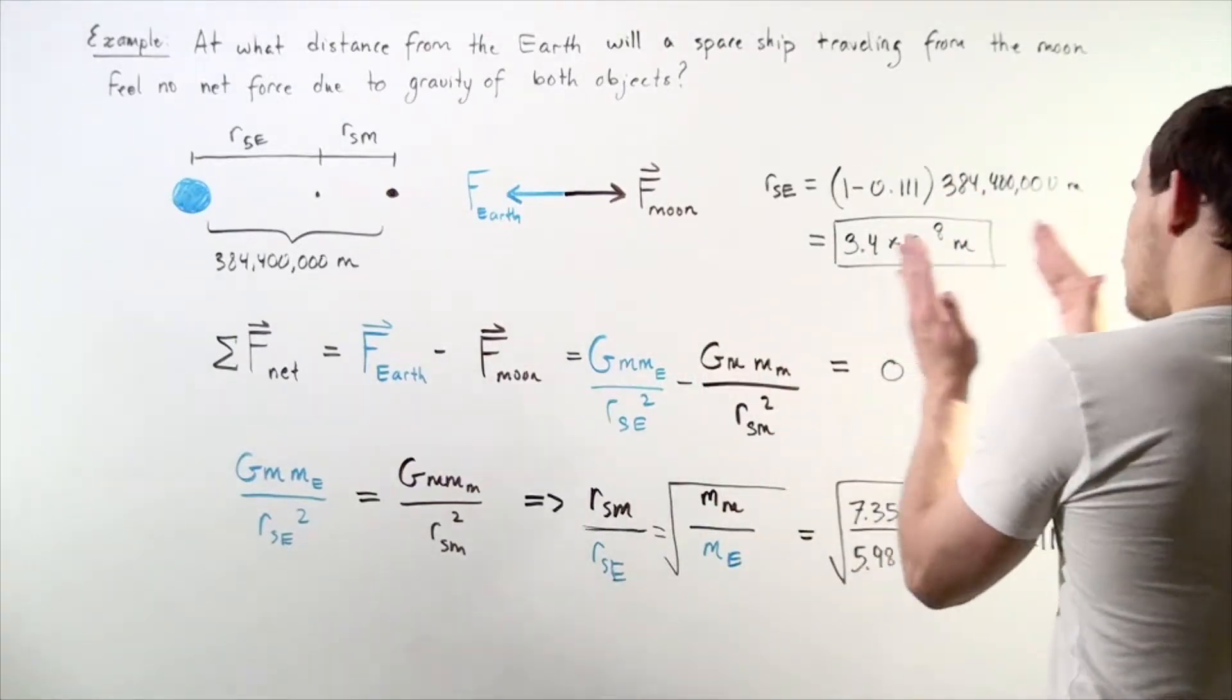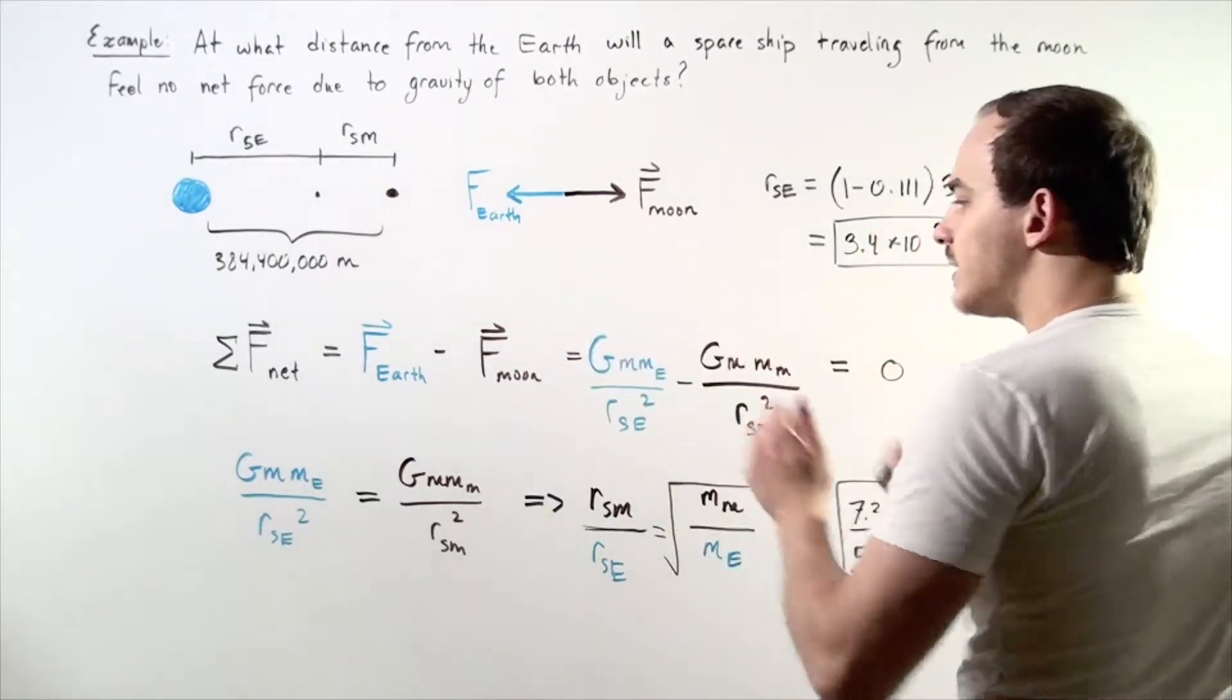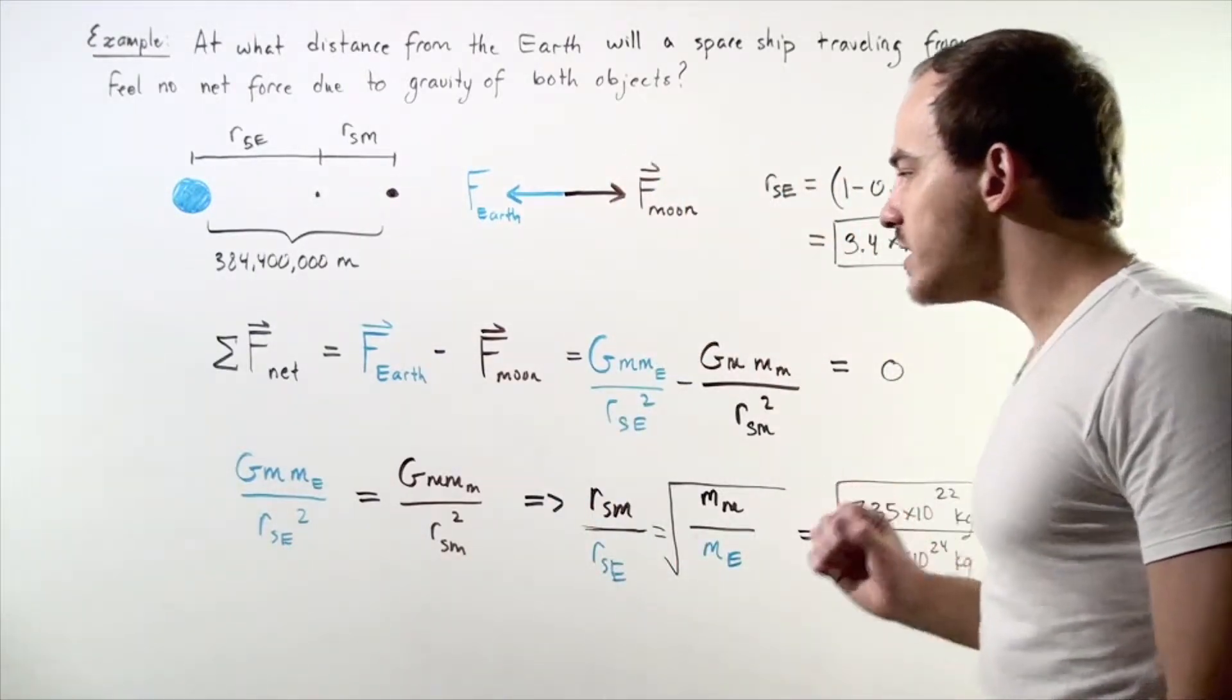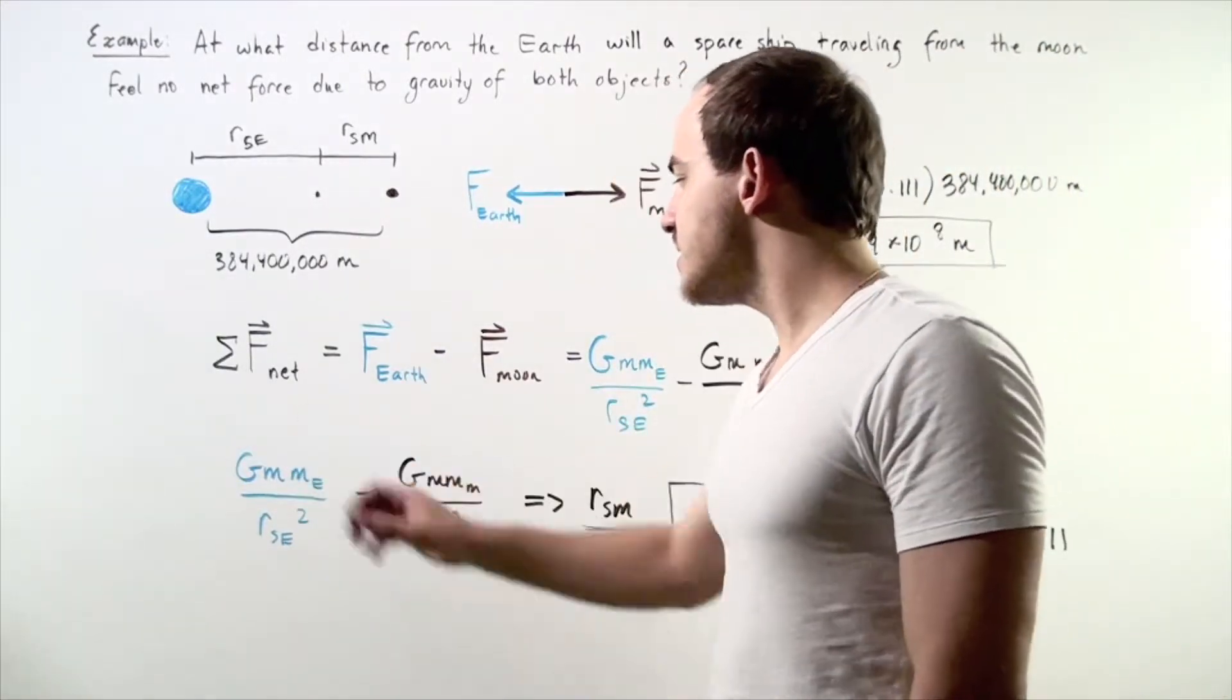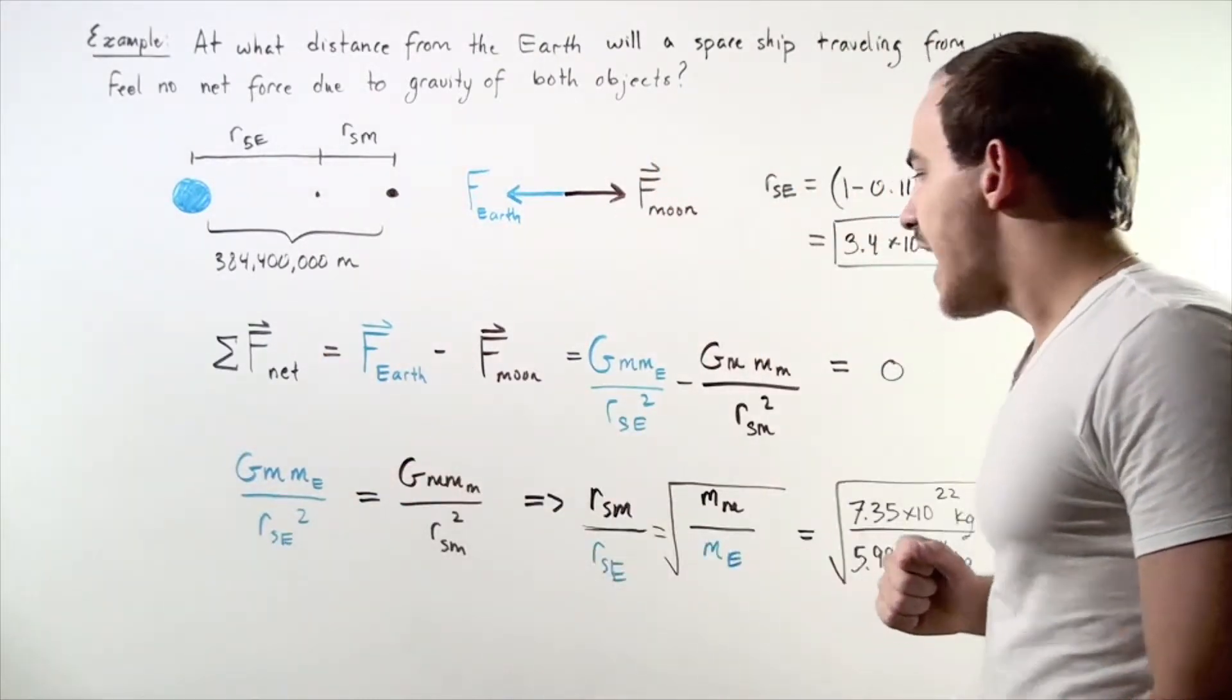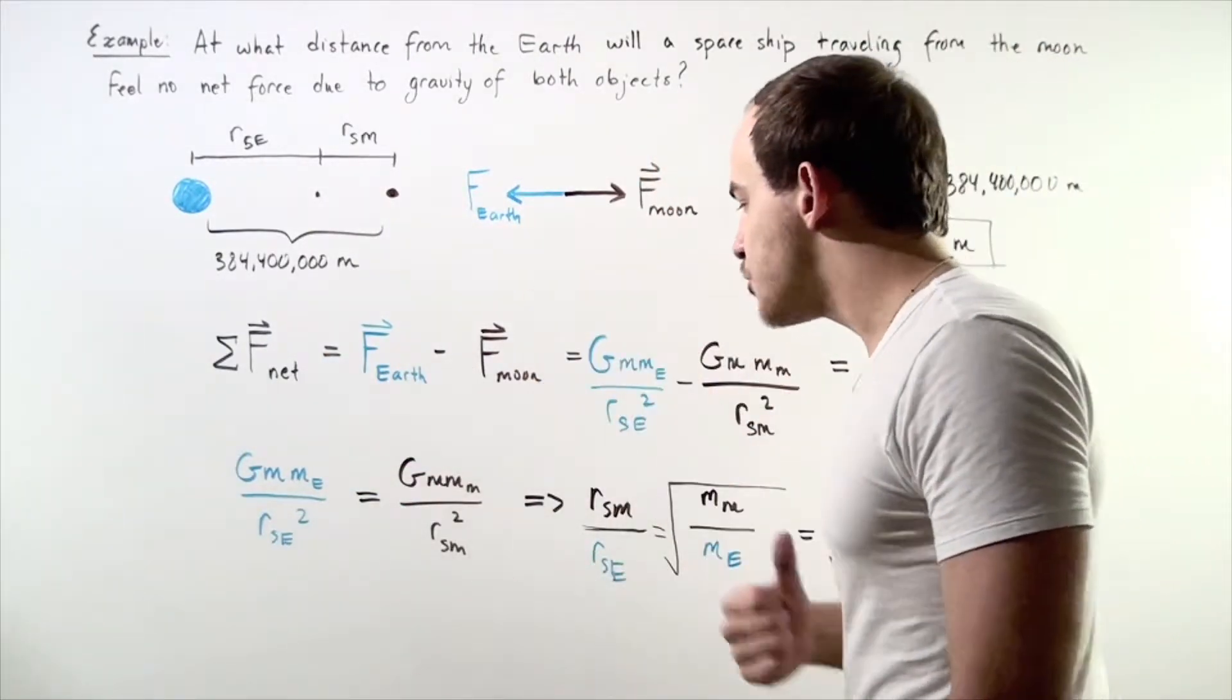Let's bring this guy to the right side and leave this at the left. We get the following result. Notice, our masses and g's appear on both sides, so we can cross these out. Then, after we rearrange our equation, we get the following ratio.